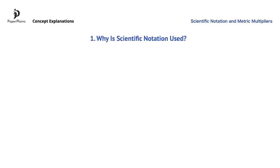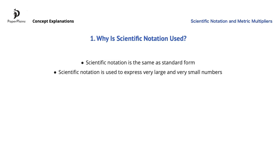Scientific notation means exactly the same thing as standard form. The expression standard form is mainly used in the UK and a few other places. Scientific notation is used to express very large and very small numbers, and its name comes from the fact that it is in the sciences where we come across such numbers.